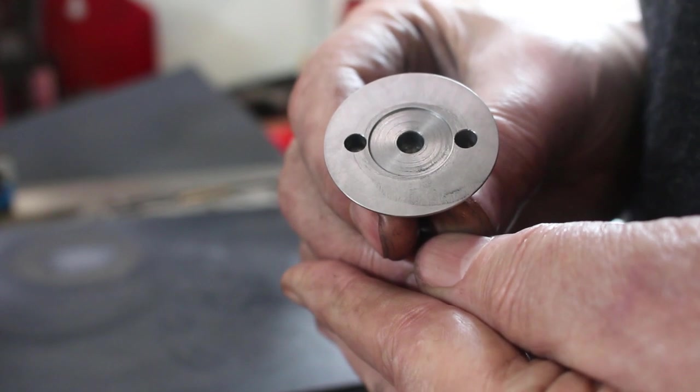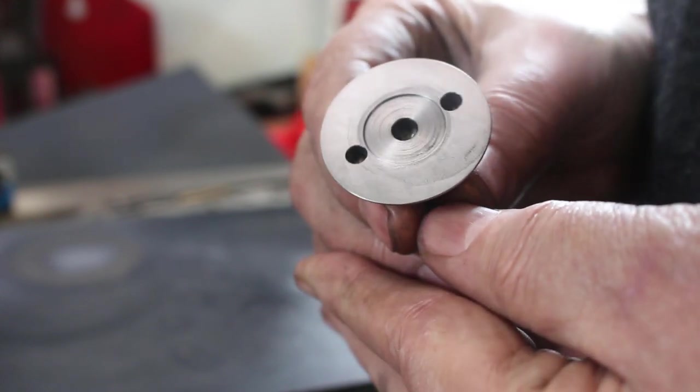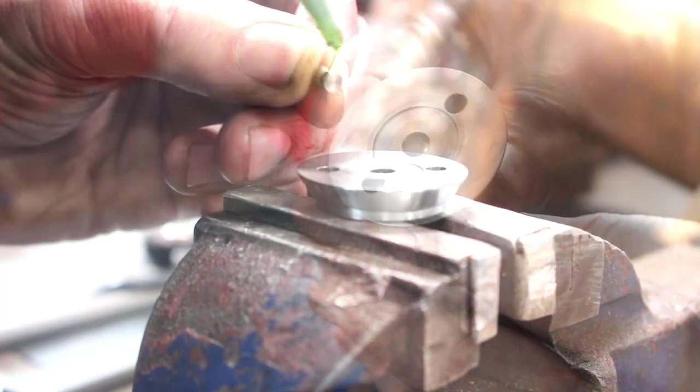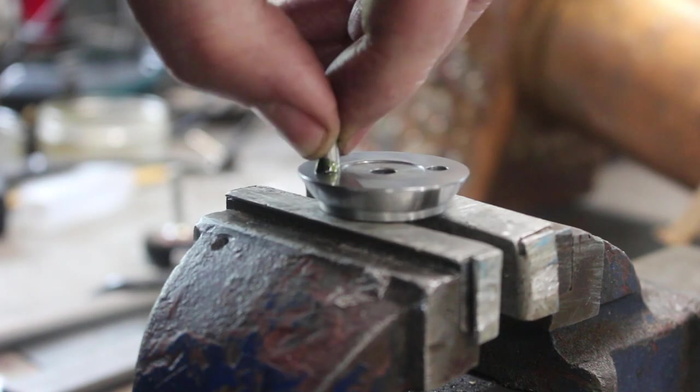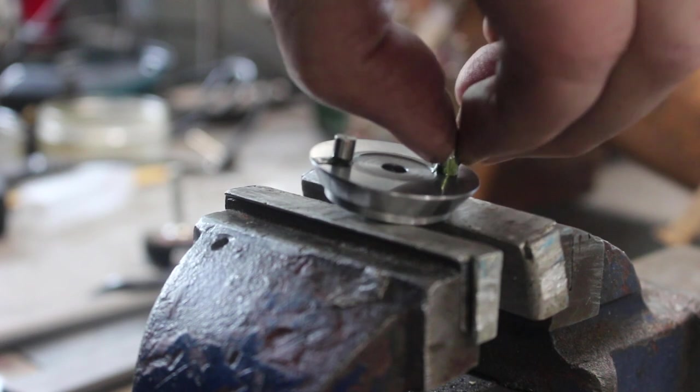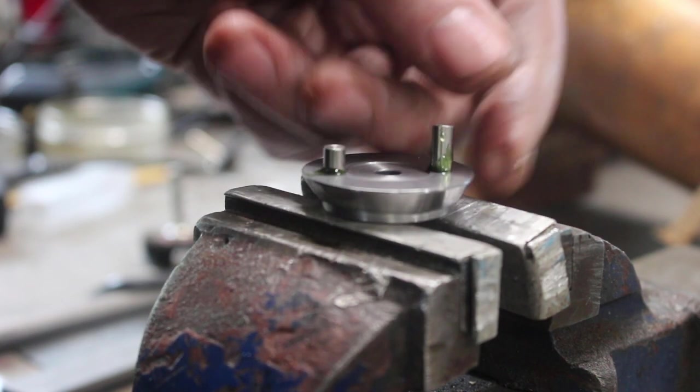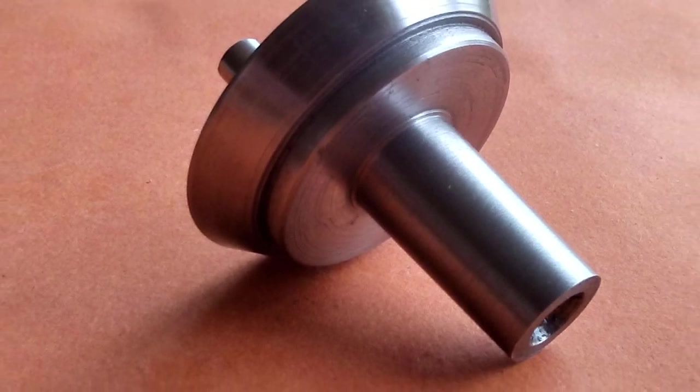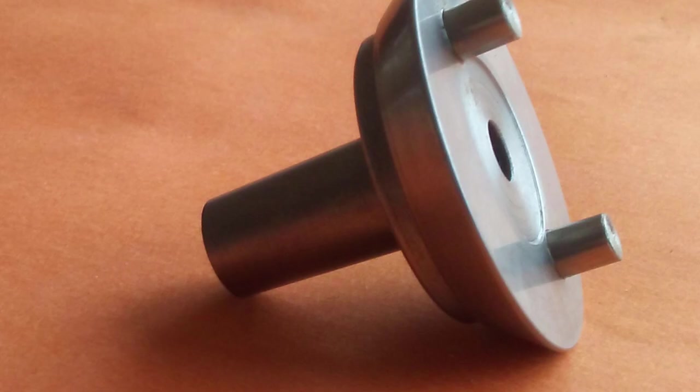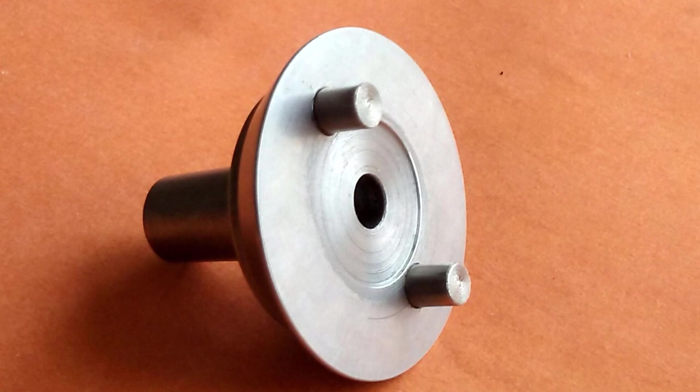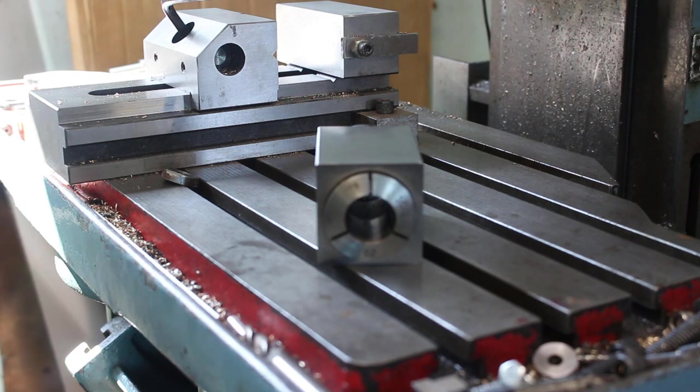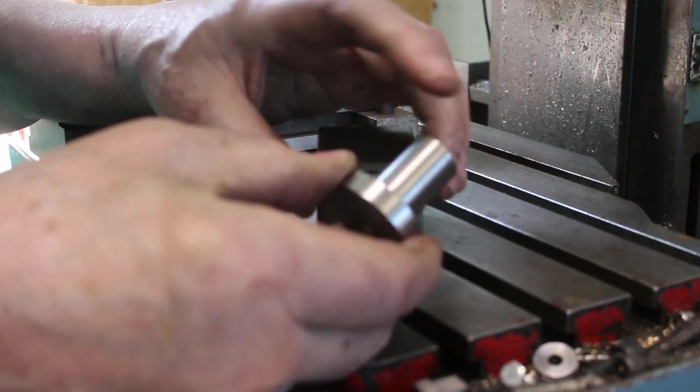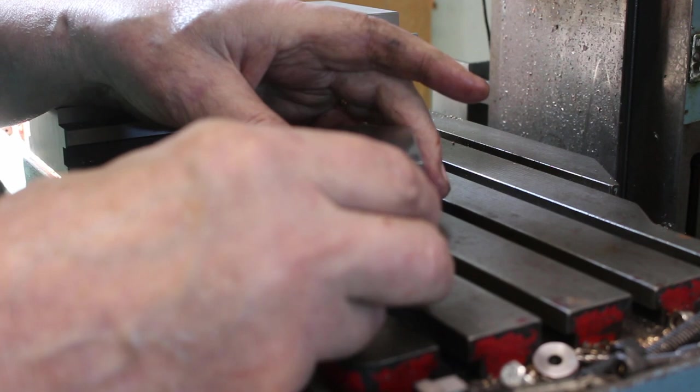I haven't quite cleaned out all the machining marks but from a functional point of view that's more than we need. It's time to make the intermediate drive gear now, so I've turned up a bit of bar with a 20 millimeter spigot so I can hold it in the collet chuck.